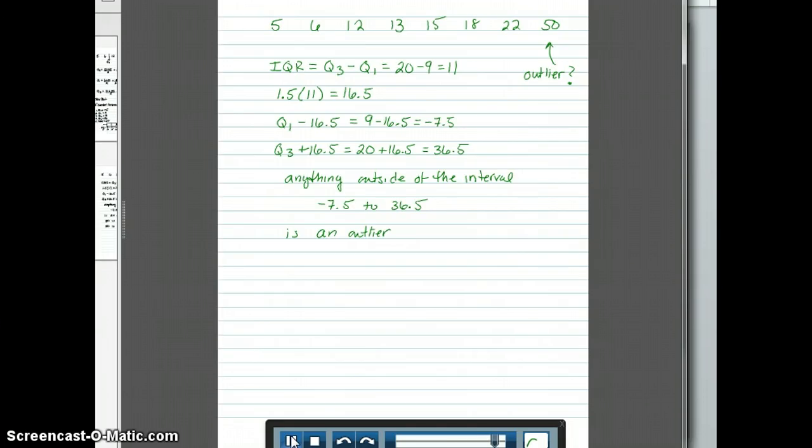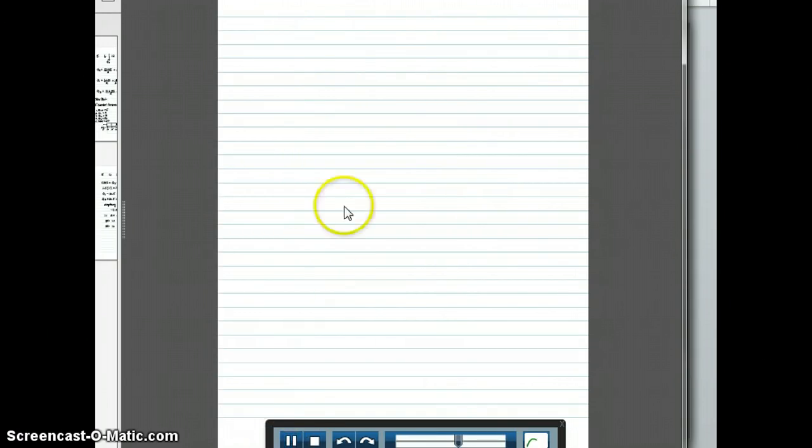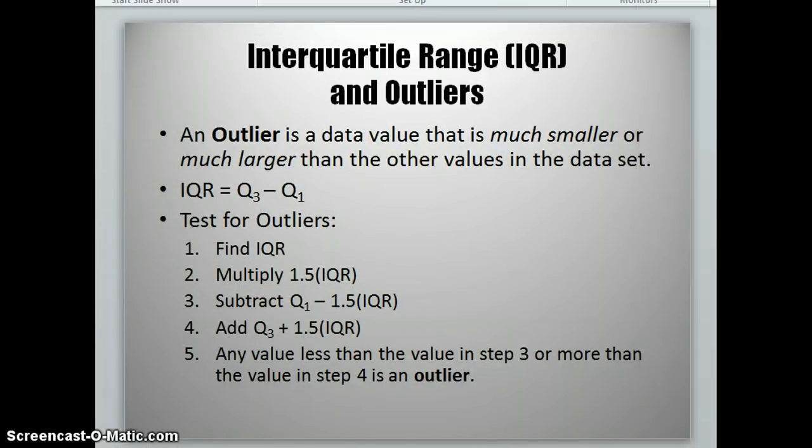Now for 50, 50 is much larger than 36.5 so that tells us that 50 is an outlier. If we had a data value that was less than negative 7.5, that would also be considered an outlier. This is a test that we can use so that we can be certain that an outlier is present. And if we decide we can always delete that outlier if we find that it is going to skew our data set.